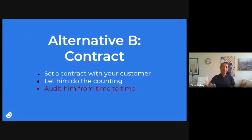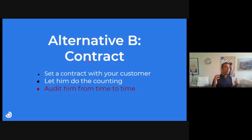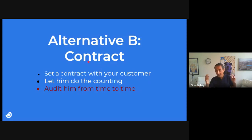What's the second alternative? A contract — very simple. Write a contract, tell the customer exactly what they can use, let them do the counting and manage it, and then we'll come to audit them. If they use more, we'll charge them. Is it good? Not really. Many customers have been doing that for many years. It's not ideal, and you can speak with many customers who went through auditing and feel that they can't really manage the software.